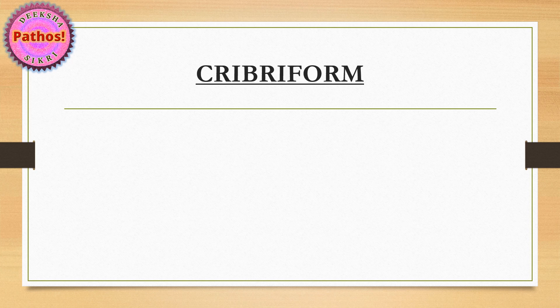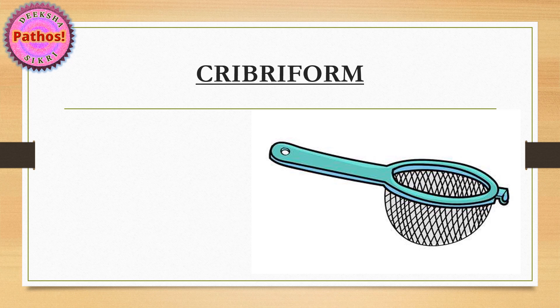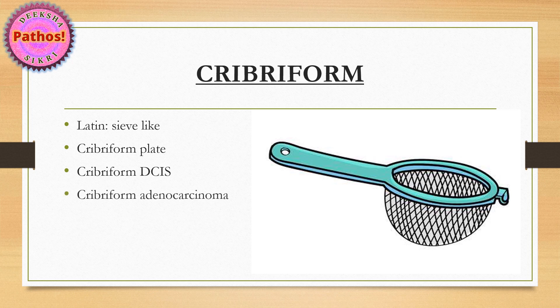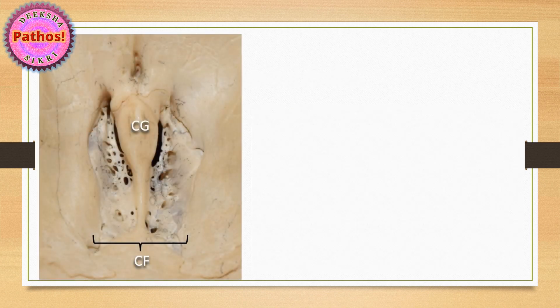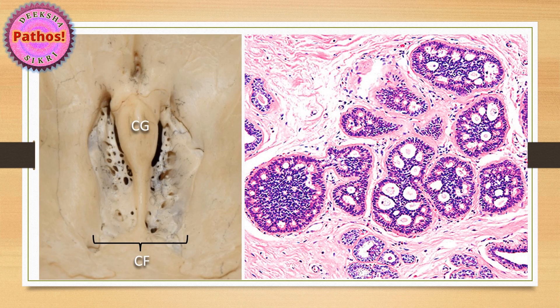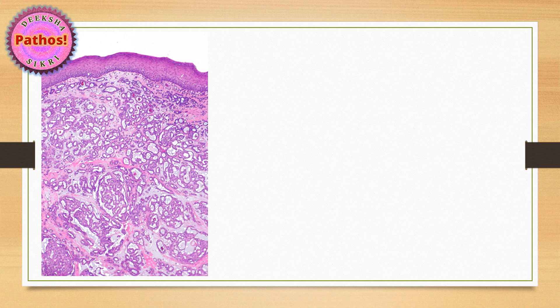Moving on to the letter C — first, cribriform. Form means formation or type, and cribri basically means sieve-like in Latin. The terms where we use cribriform are: the cribriform plate, cribriform DCIS, and cribriform adenocarcinoma — and in each one of them you're going to see lots of empty spaces like a sieve. This is a cribriform plate. This is a DCIS — an intraductal carcinoma with lots of cribriform, sieve-like spaces in between; the duct is full of cells but they are not infiltrating, so the pattern is called cribriform DCIS. This biopsy from a tongue mass shows mucosa on top and infiltrating cribriform glandular appearance in the submucosal area — a cribriform adenocarcinoma.